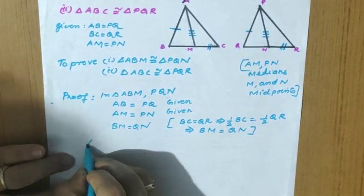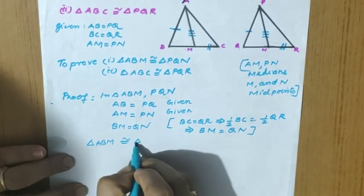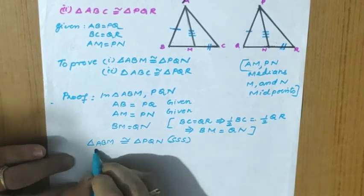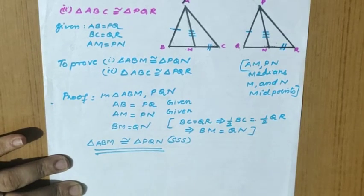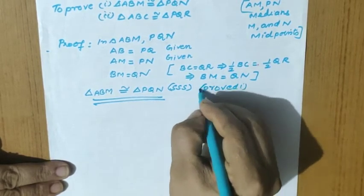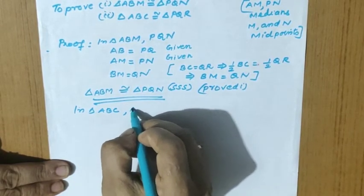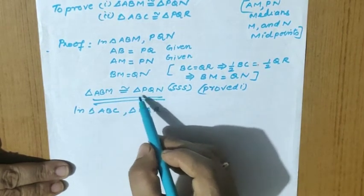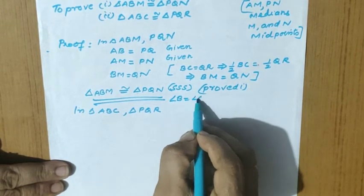Therefore triangle ABM is congruent to triangle PQN by SSS criteria — first part proved. Now for the second part, by CPCT from this SSS result, angle B equal to angle Q. This will be used for the next congruence.